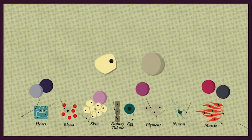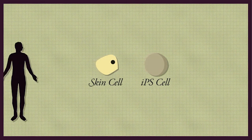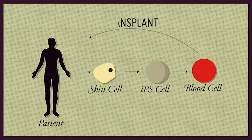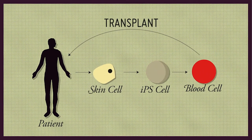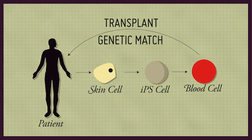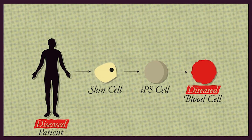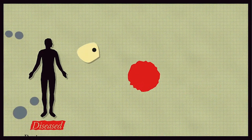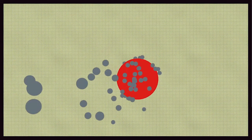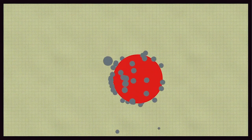The creation of IPS cells from individual patients may one day allow us to develop replacement tissues that are a perfect genetic match to the patient. In addition, the creation of IPS cells from patients with specific diseases will allow scientists to develop new drugs to treat a wide variety of disorders.